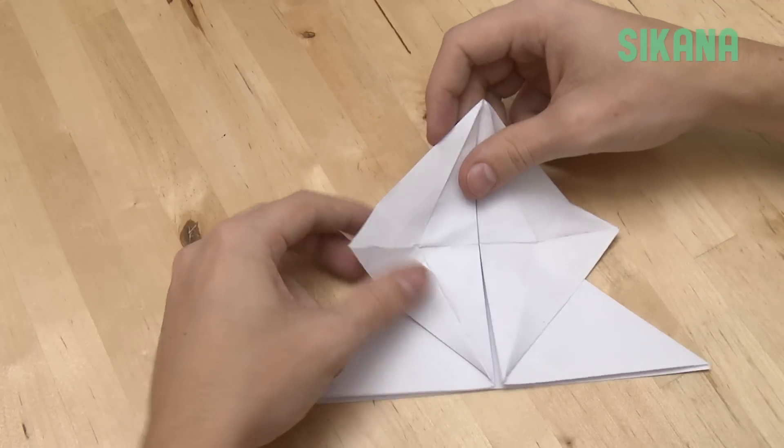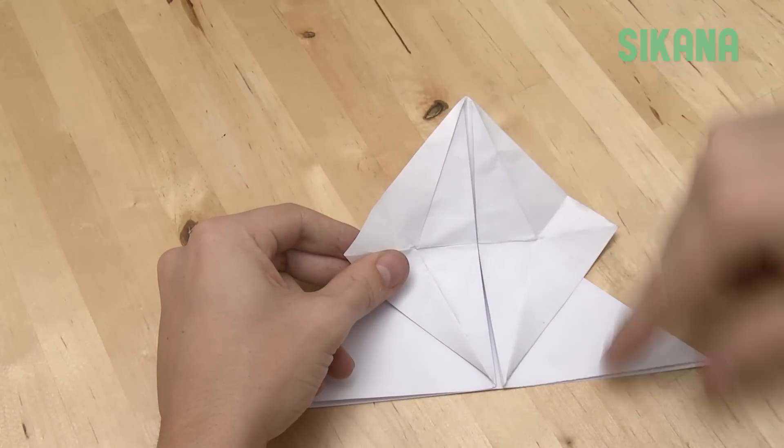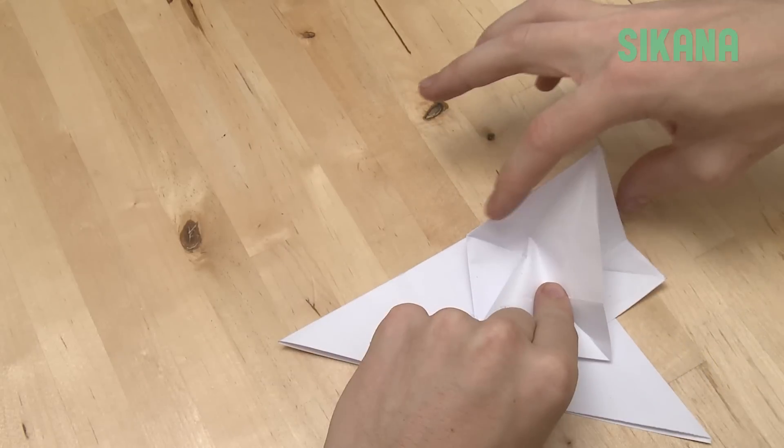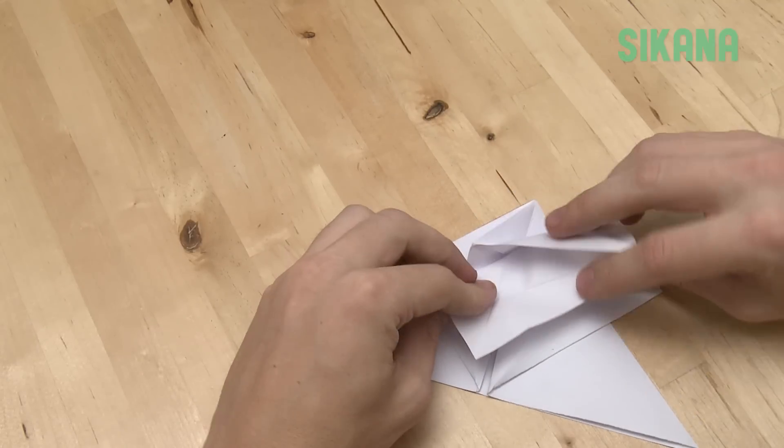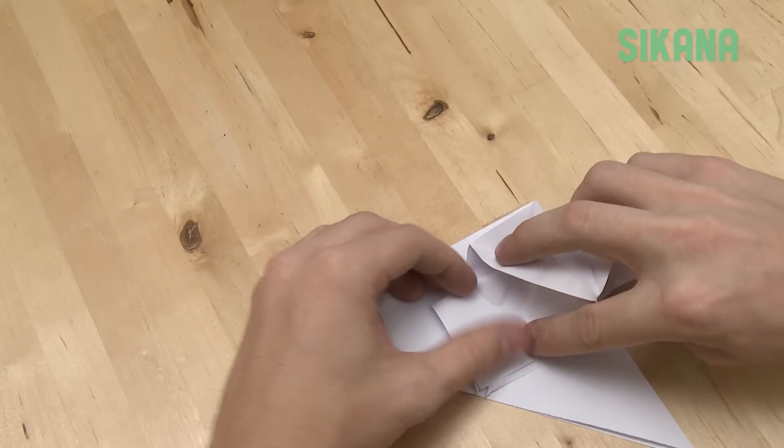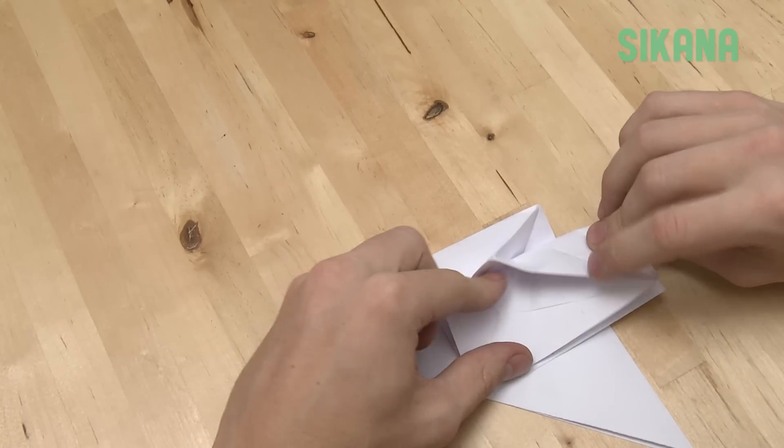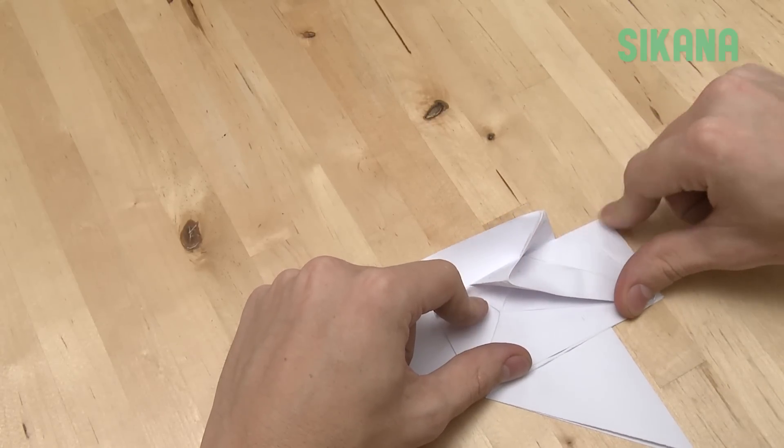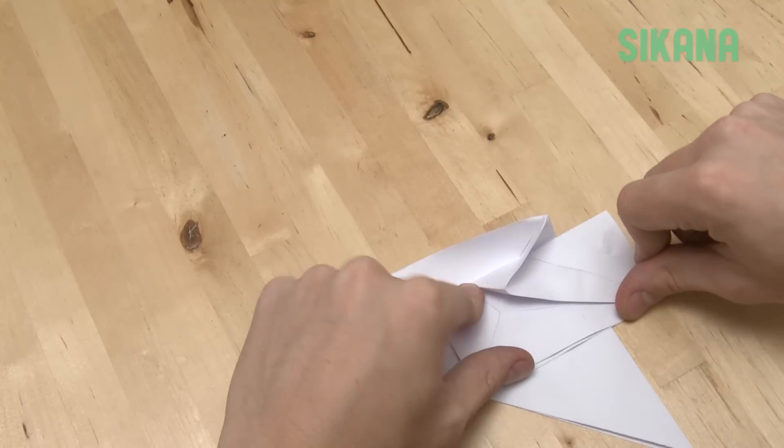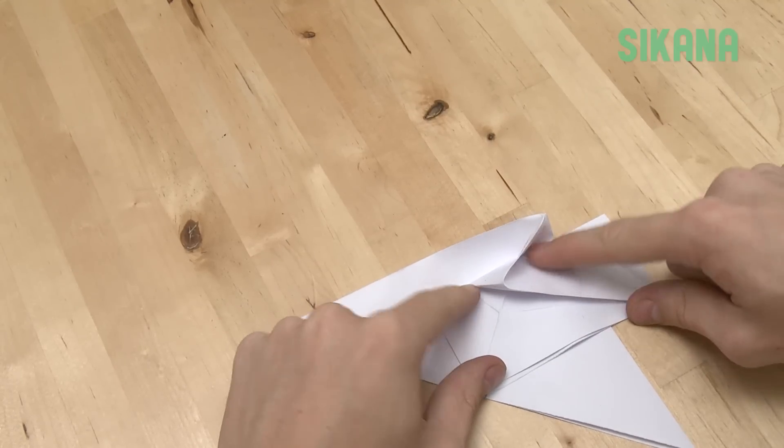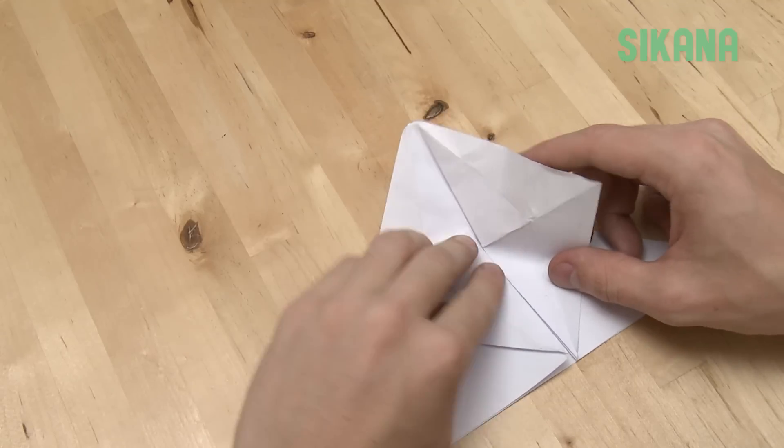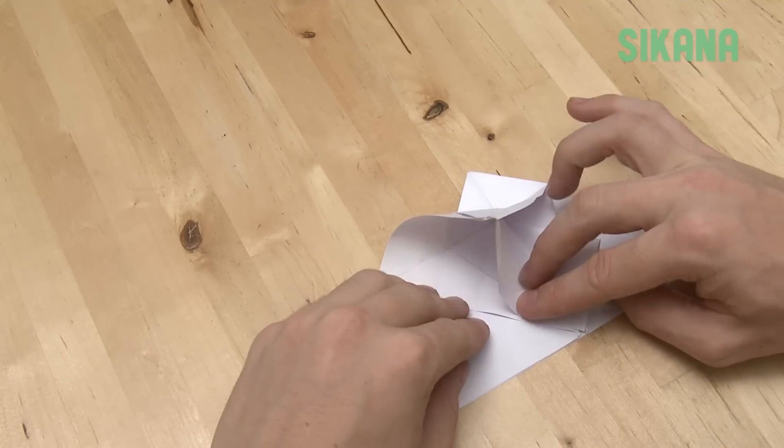The next fold is more complicated. Fold this length over that length. This part prevents you from folding completely. There's a little strain here, but it's okay. Fold the top, then the bottom. Repeat exactly for the other side.